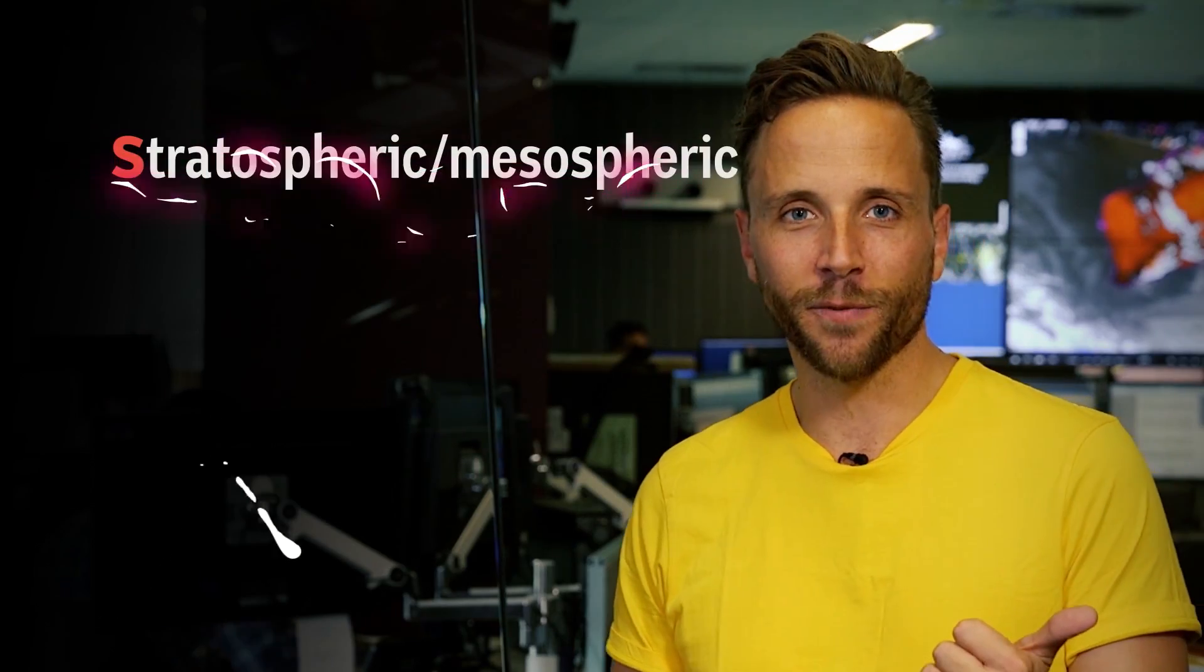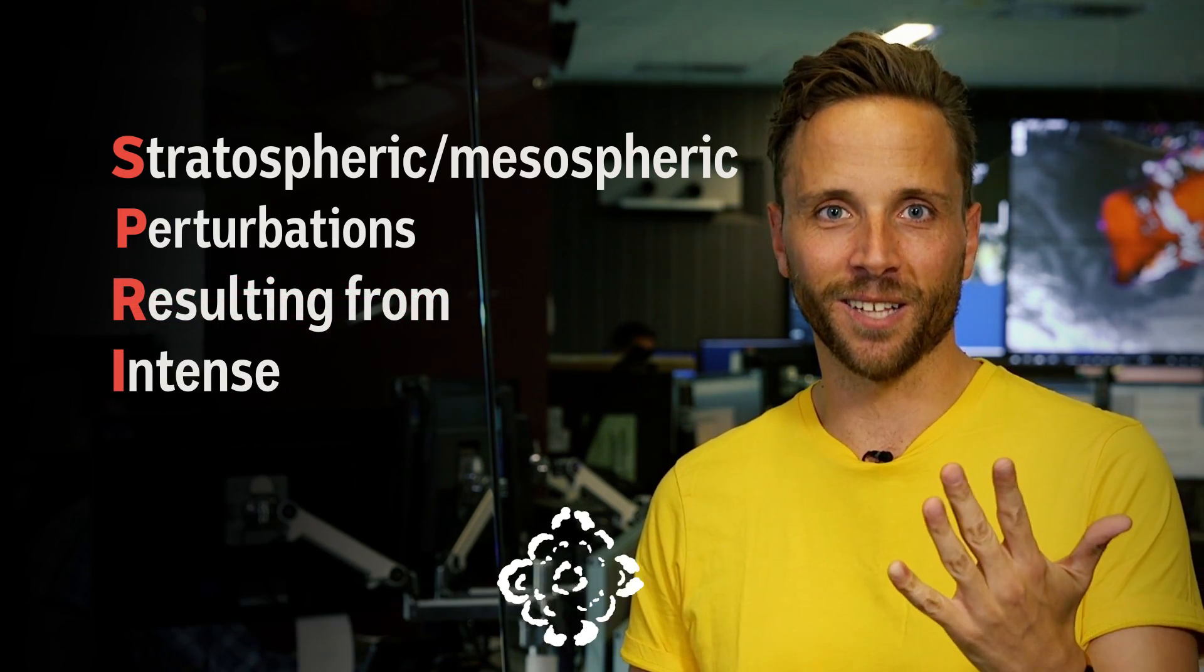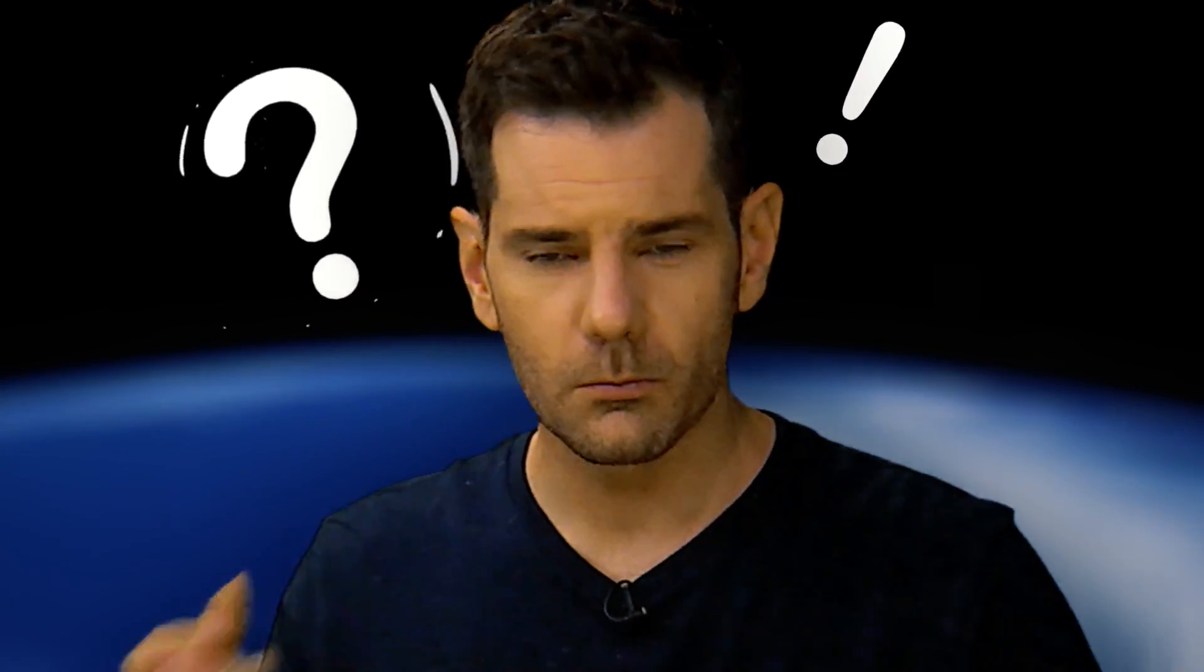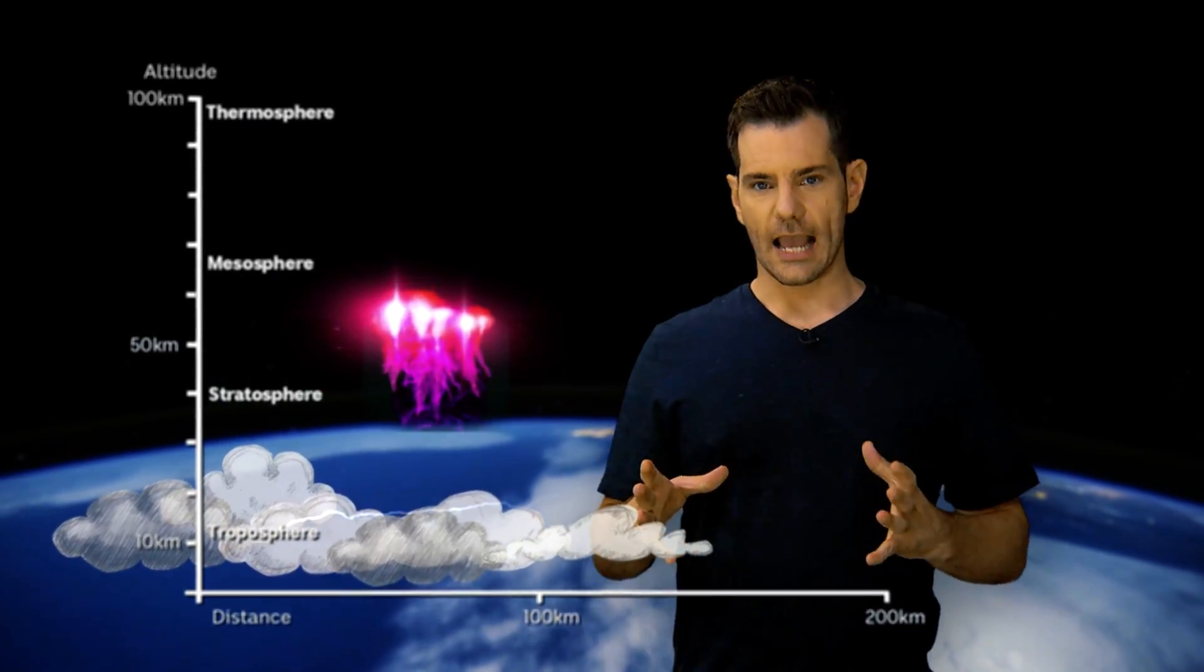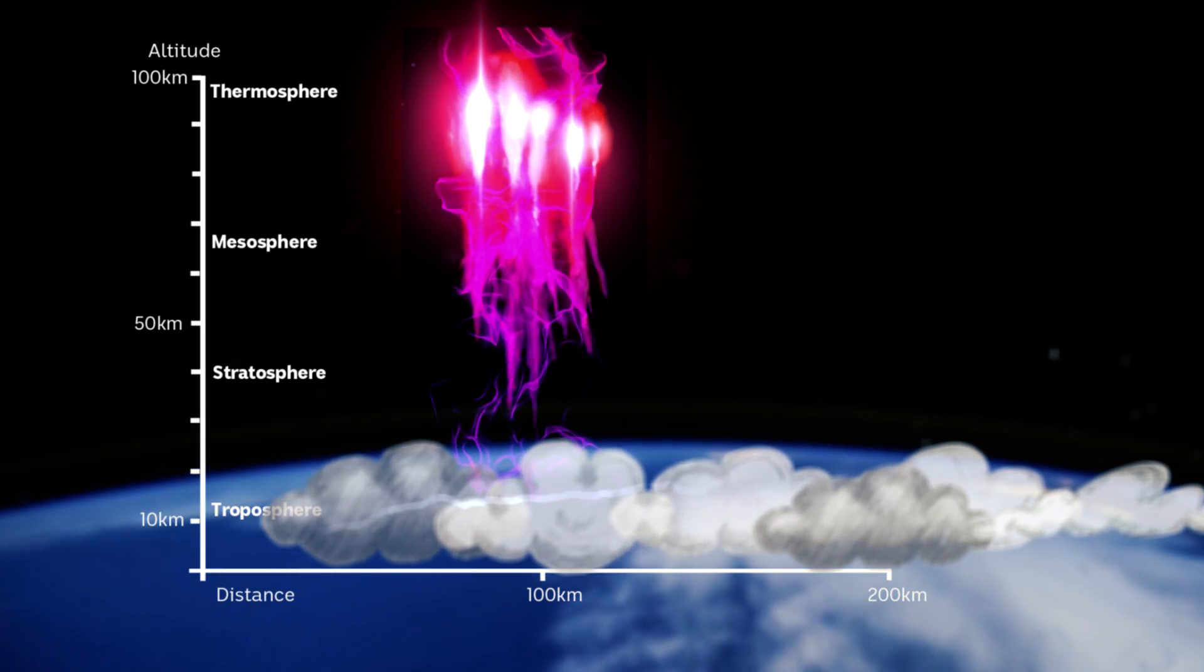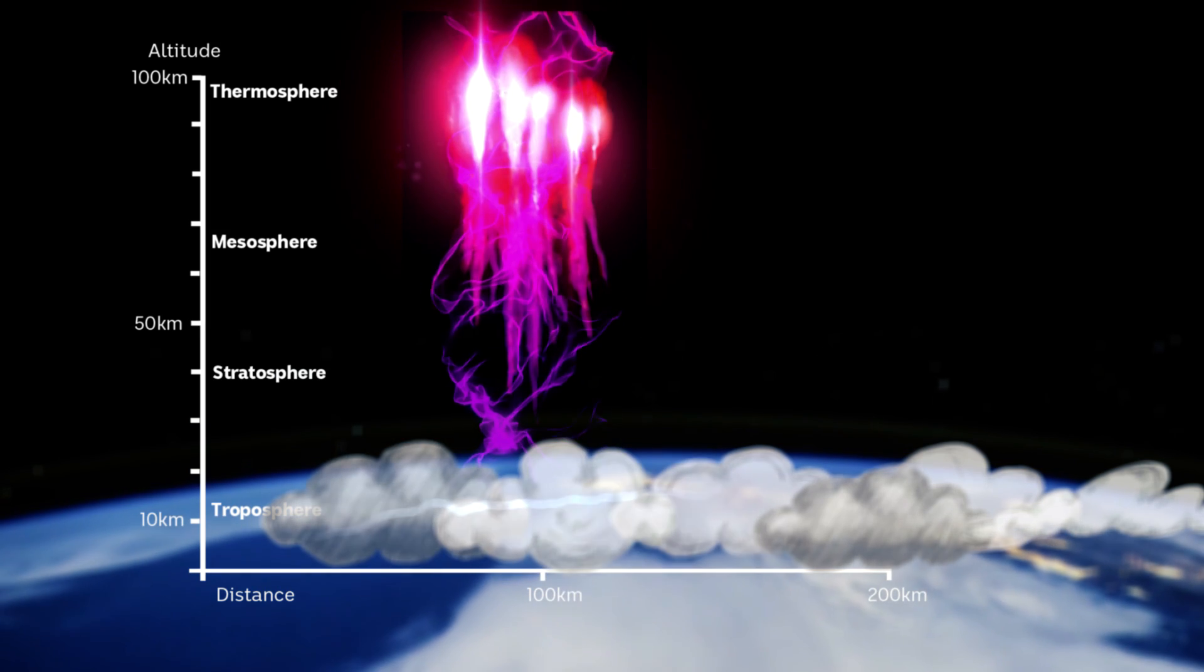Sprite stands for stratospheric mesospheric perturbations resulting from intense thunderstorm electrification. Sprites start as a huge ball of red light with tendrils that stream down and turn purple then blue.